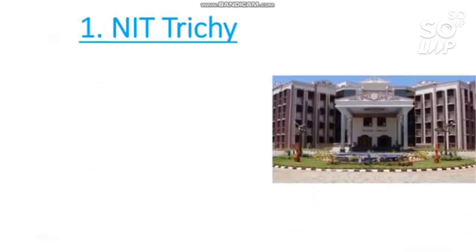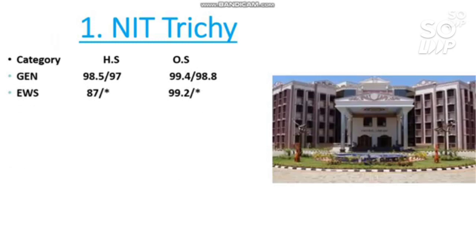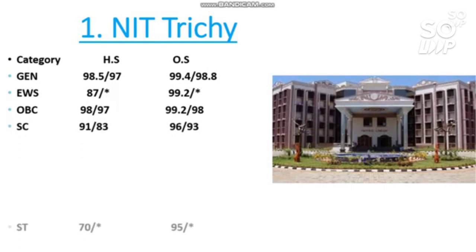Number one is NIT Trichy. Mechanical branch cutoff: General 99.4, EWS 99.2, OBC 99.2, SC 96, and ST 95 percentile. This is all about the top 10 NIT mechanical branch percentile required to get the mechanical branch in the top 10 NITs.